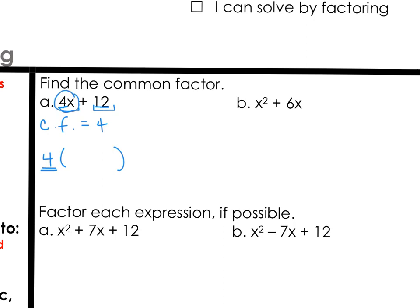If 4x + 12 has a common factor of 4, and we put that out in front, then for that first term all that would be left is x. And if we factor that 4 out of the 12, 4 goes into 12 three times, therefore we would have 4(x + 3).